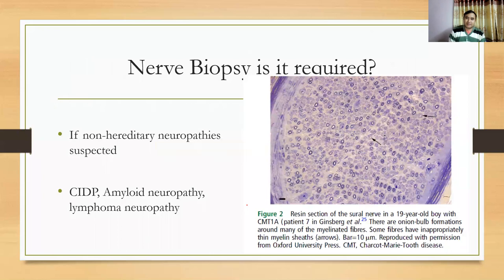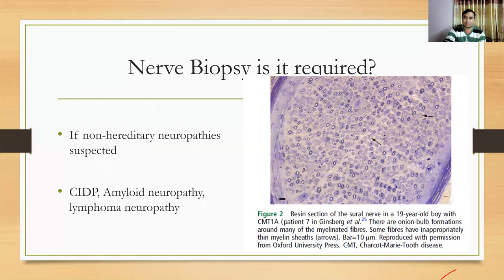Is nerve biopsy required when diagnosing hereditary neuropathies? Usually we do not perform nerve biopsy in genetic neuropathies, but if we are still suspecting non-hereditary neuropathies like CIDP, amyloid neuropathy, or lymphoma neuropathy — which are treatable conditions — then we may need to do a nerve biopsy.